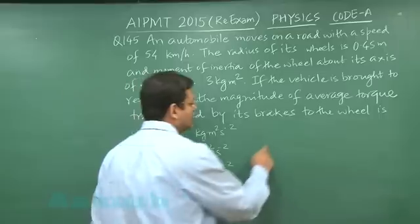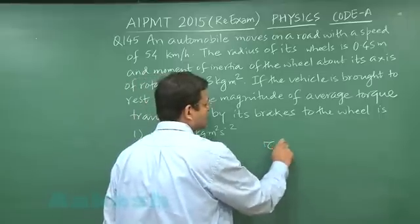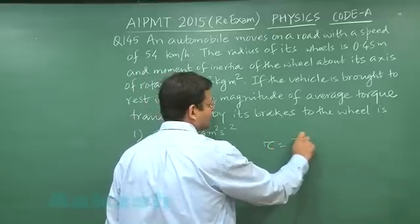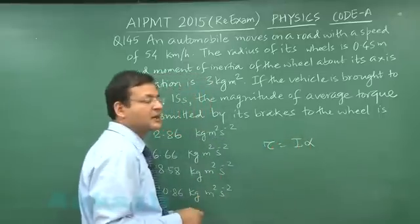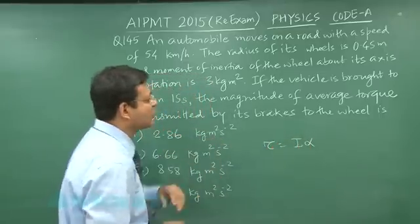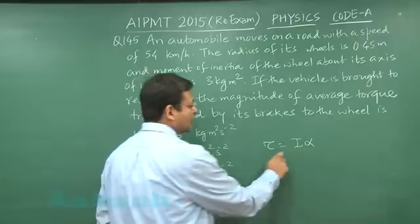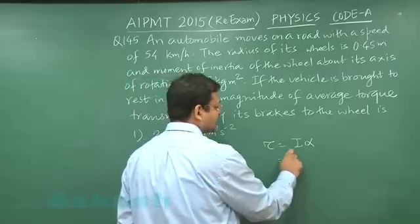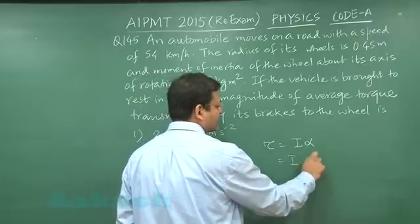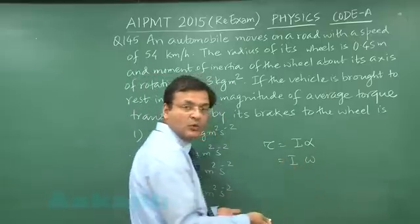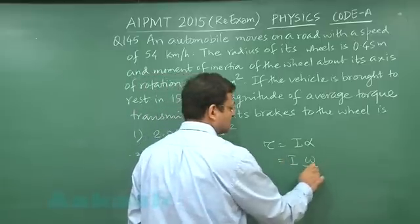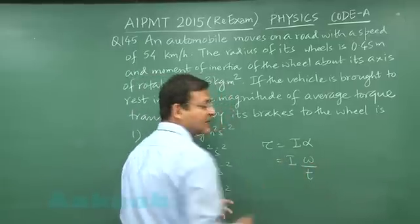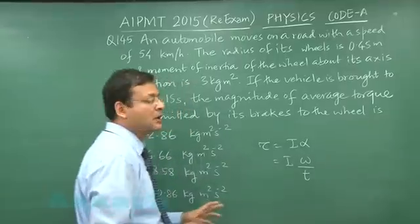For torque, you can use the formula τ = Iα. Since they want the average torque, you can modify this expression to I times the change in omega divided by the time interval.